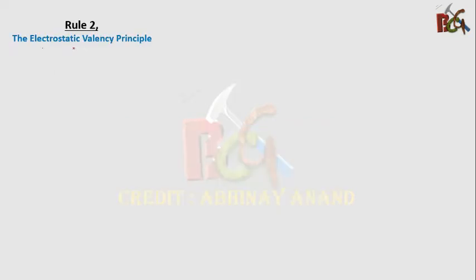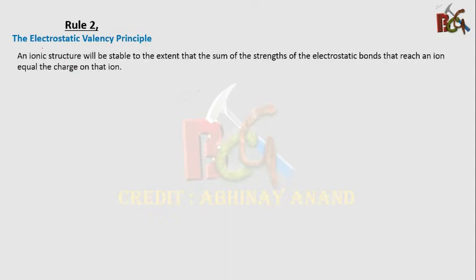The second rule of Pauling's is the electrostatic valence principle. An ionic structure will be stable to the extent that the sum of the strengths of the electrostatic bonds that reach an ion equals the charge on that ion.